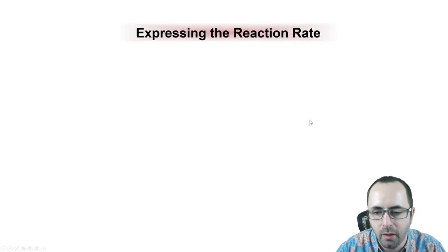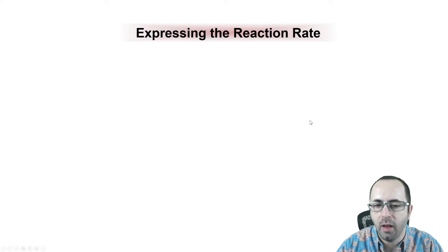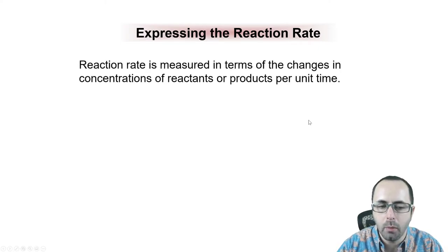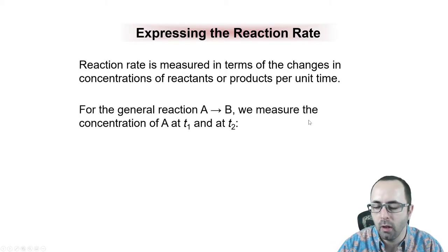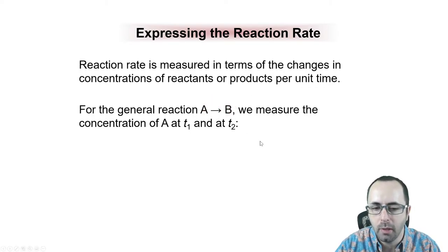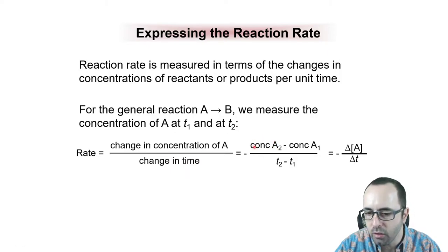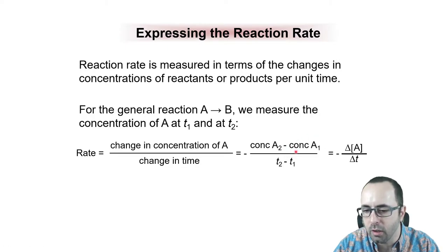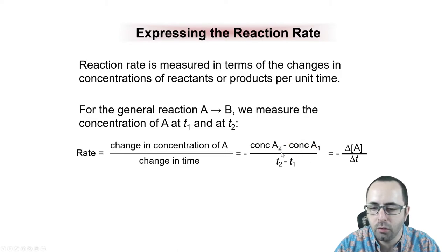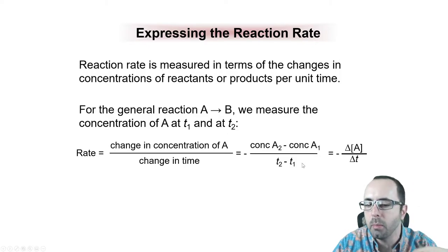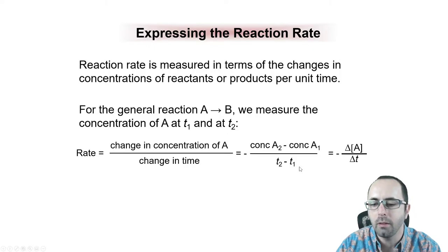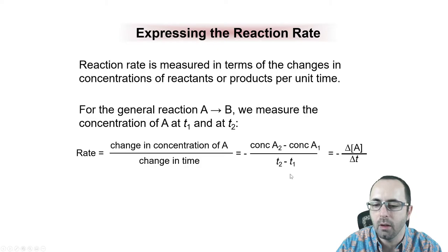How are we going to express how fast a reaction is going on paper? The reaction rate is measured in terms of the change in concentration over a certain change in time. For a generic reaction where reactant A produces product B, the rate is the change in concentration of A over the change in time: the final concentration minus the initial concentration divided by the change in time. This will be negative if the concentration is going down.